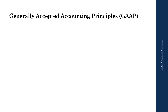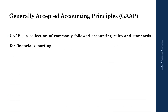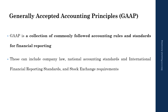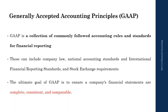GAAP, or Generally Accepted Accounting Principles, is a collection of commonly followed accounting rules and standards for financial reporting. These can include company law, national accounting standards, international financial reporting standards, and stock exchange requirements. The ultimate goal of GAAP is to ensure a company's financial statements are complete, consistent, and comparable.